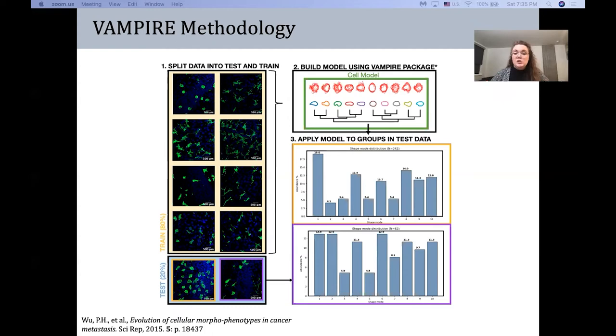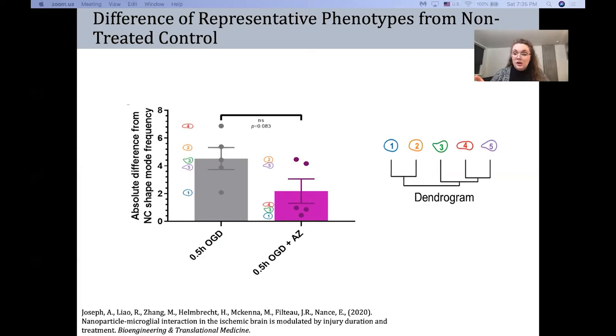And those produce a frequency of how much each representative shape feature occurs in every image, in every region, and across every treatment group. And when we compare those, we found that there's actually a difference from the non-treated control in our injured group and that that reverts after treatment.